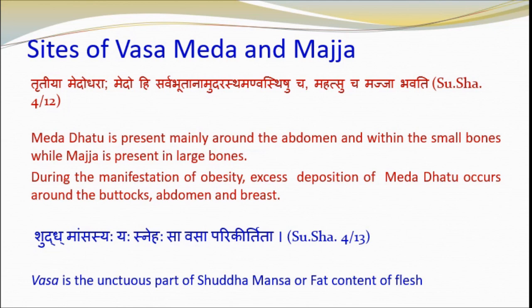Majja is present in large bones and is of yellow color, hence known as yellow marrow. Vasa has been considered as the unctuous part of Shuddha Mansa, and is an Upadhatu. Both Medha and Vasa chemically come under fat. After five years of age, all large bones start becoming fatty, and after twenty years of age become fully fatty, due to which they are not helpful in RBC formation. Considering this quality, Ayurvedic scholars have not described Majja as blood-forming organs like liver and spleen, but considered Majja under Dhatu due to its Dharana and Poshan functions.